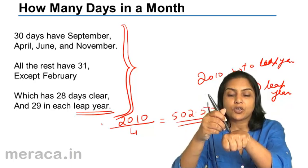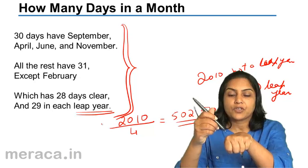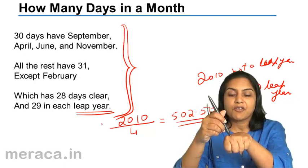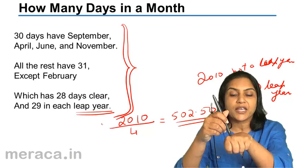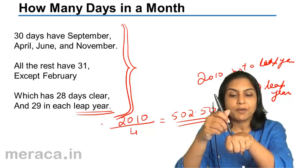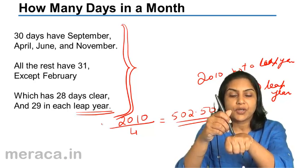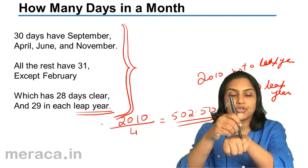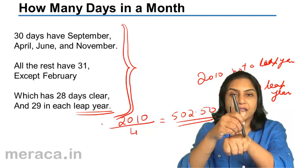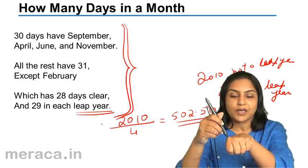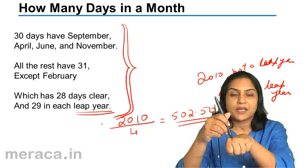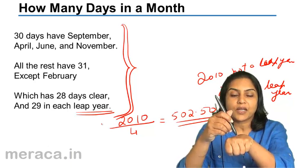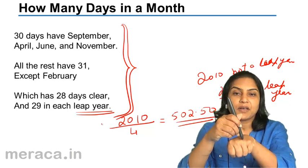Continuing: September, October, November, December. So January has 31 days, February has 28 or 29 days — 29 in a leap year divisible by 4, otherwise 28. March 31, April 30, May 31, June 30, July 31, August 31, September 30, October 31, November 30, December 30.